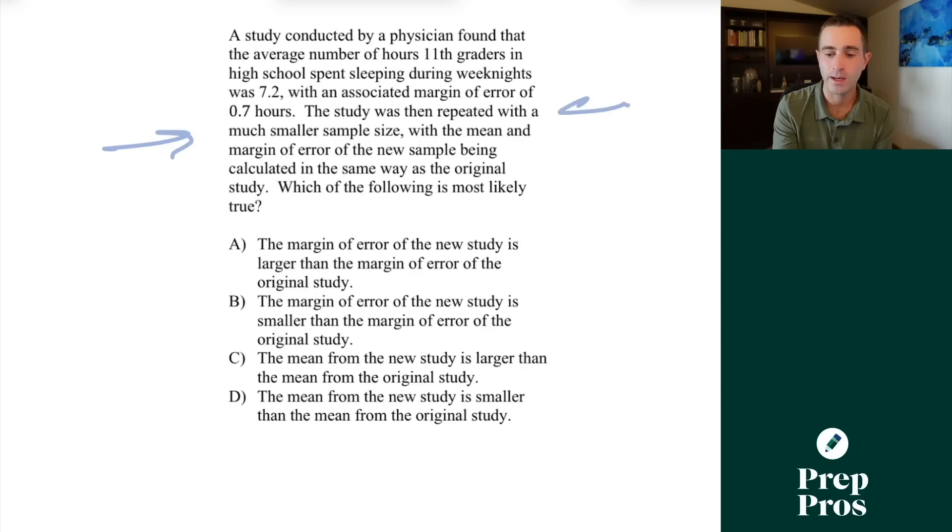The relationship we need to understand is: as sample size increases, margin of error decreases; as sample size decreases, margin of error increases. So when the study was repeated with a much smaller sample size, sample size decreases, margin of error increases, that's going to let us see that A is our correct answer.